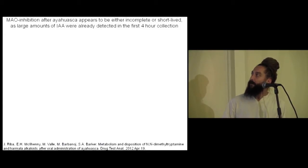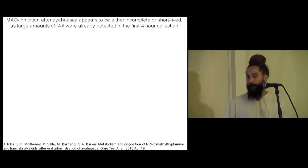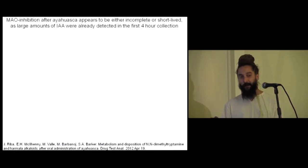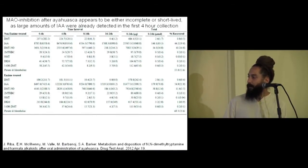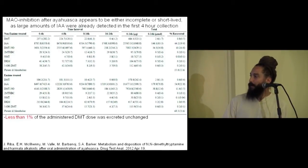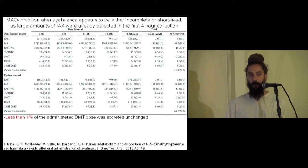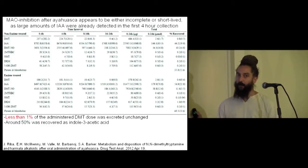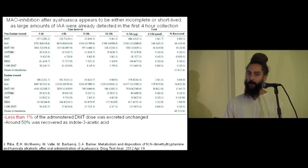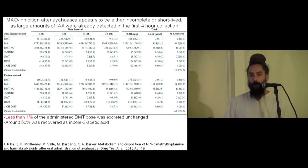MAO inhibition after ayahuasca appears to be either incomplete or short-lived, as large amounts of indoleacetic acid were already detected in the first four hours. Geordi estimated that the inhibition is only around 15% of the MAO-A in your gut — very minor, but enough to get the DMT up into your brain. Less than 1% of the actual administered dose of DMT could be recovered in urine — it gets completely metabolized into other things. Around 50% was recovered as indoleacetic acid, though we can't totally say it's coming just from the DMT because the MAOI effect of the harmines could be increasing tryptamine and resulting in more indoleacetic acid.